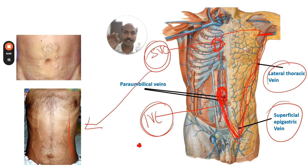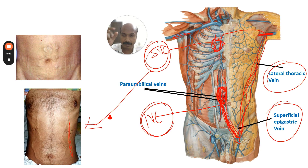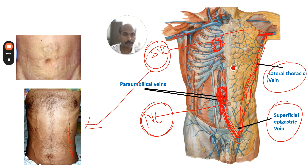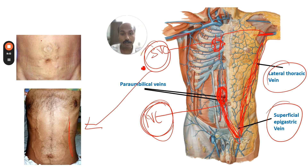In summary, there are two important differentials for dilated veins in the abdomen: first, caput medusa — formed by dilated para-umbilical veins due to portal hypertension; and second, the thoracoepigastric vein — seen in IVC or SVC obstruction.